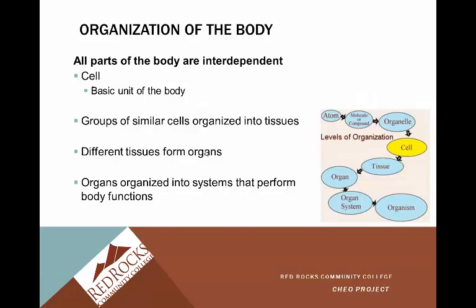All parts of the body are interdependent. We talk about body systems, but they're interdependent upon each other. When you have a failure of one system, it will ultimately have implications for every other system — for example, if someone's kidneys fail, it'll ultimately impact the cardiovascular system and every other system. We talk about them in systems because it's easier to understand. The cell is the basic unit of the body. Groups of similar cells form tissues, different tissues form organs, and organs are organized into systems that perform body functions — going from the simplest level of organization up to the most complex.